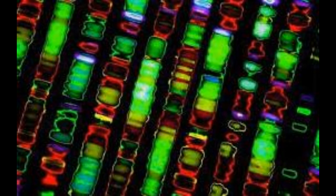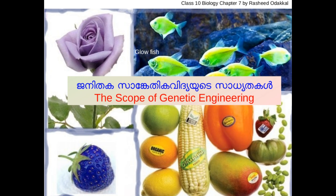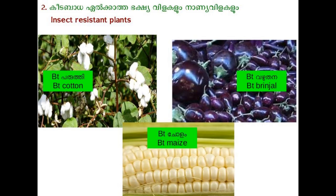The technology known as gene mapping helped to identify the location of a gene in the DNA. BT crops that are highly productive and free from disease and pest are one of the major scopes of genetic engineering.